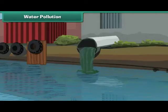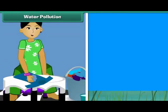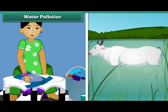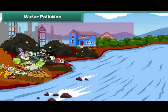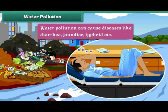Domestic and industrial sewage pollute water. Activities such as washing clothes and bathing animals in rivers also cause water pollution. Water pollution can cause diseases like diarrhea,